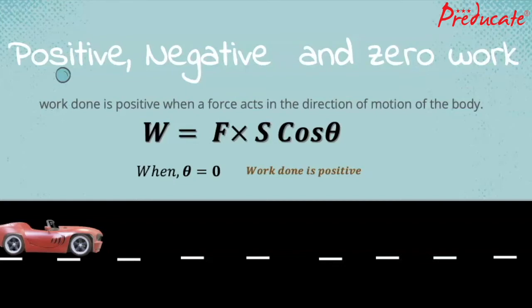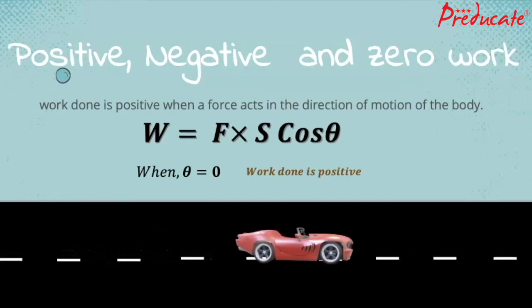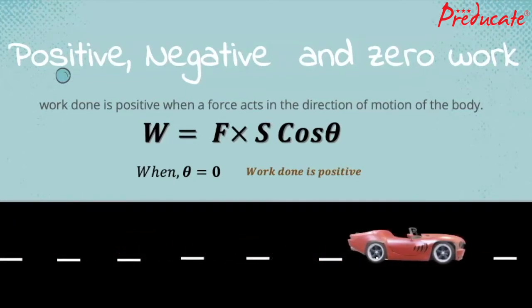For example, a toy car is moving horizontally on the ground. Here, work done is positive when a force acts in the direction of motion of the body. Work equal to force into displacement into cos theta. When theta is zero degree, work done is positive.